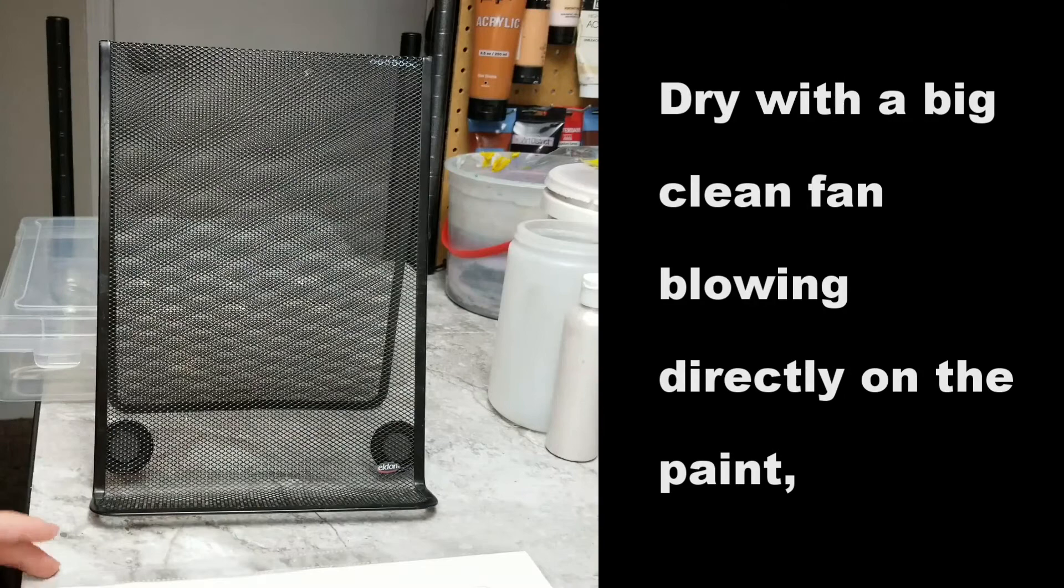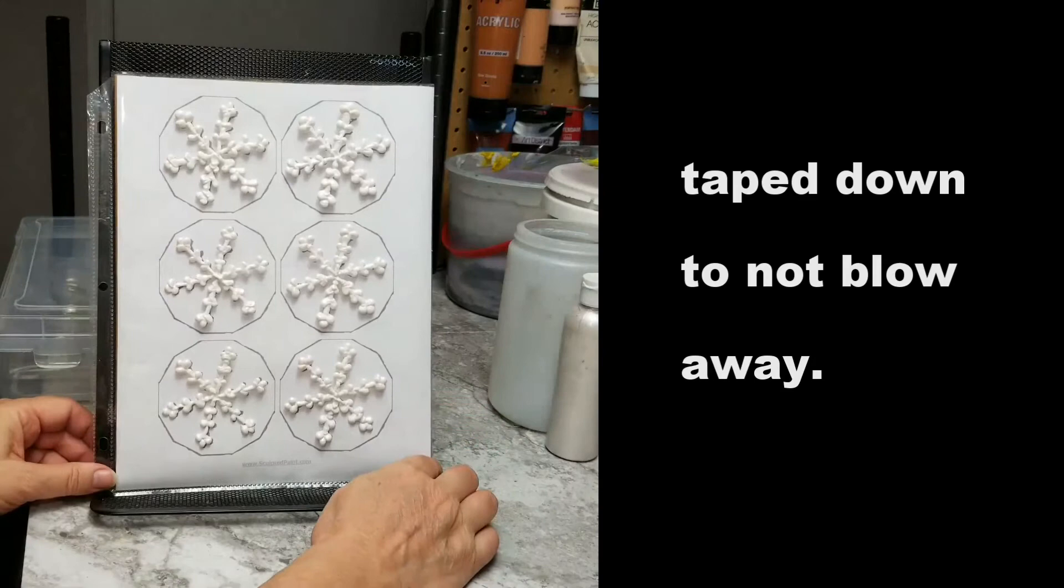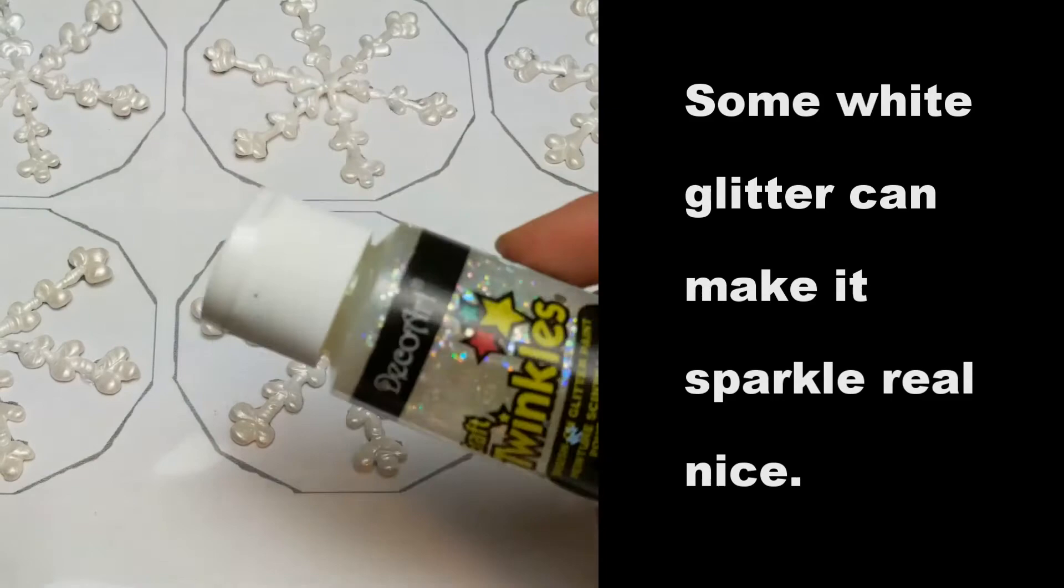Then pipe the paint on it. Dry with a big clean fan blowing directly on the paint. Tape down to not blow away. Some white glitter can make it sparkle real nice.